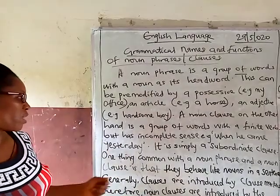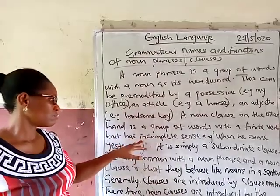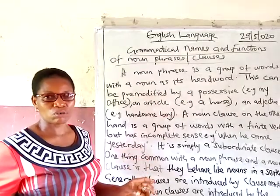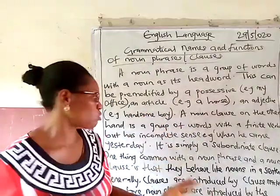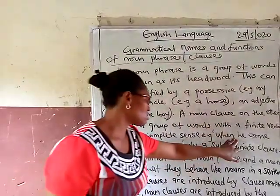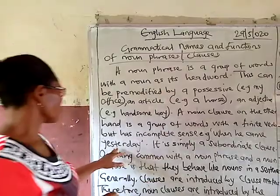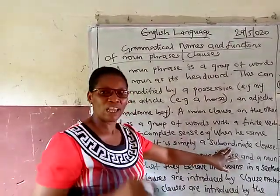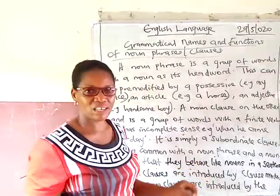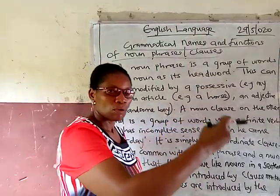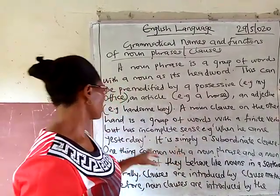A noun clause is a group of words with a finite verb but without a complete sense. In short, it is a subordinate clause. An example of a clause is 'when he came yesterday'. If you look at this group, you see that it has a verb but no complete sense. By a subordinate clause, we mean a clause that depends on the main clause in a sentence to have its complete sense — meaning a noun clause still needs another clause to depend on so that it will have complete sense.